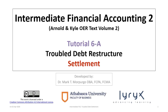Hello and welcome to Intermediate Financial Accounting 2, Tutorial 6A. This is the first of a series of three tutorials focused on accounting for restructuring of troubled debt. Tutorial 6A will focus on settlement of restructured debt. Tutorial 6B will focus on troubled debt restructuring with minor modification, and Tutorial 6C will review troubled debt restructuring with substantial modification.